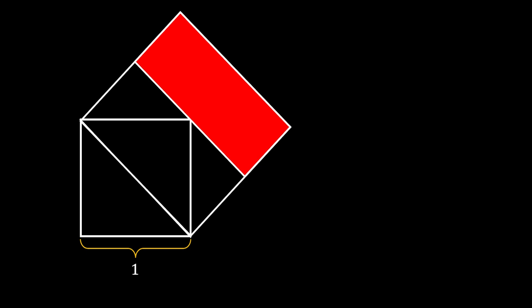Let's find the area of this rectangle. We notice the green diagonal of our smaller square, which is also the side of our bigger square. The formula for the diagonal of a square is the side times square root of two. So the diagonal equals 1 times √2, which is √2. That is the value for one side of our red rectangle.